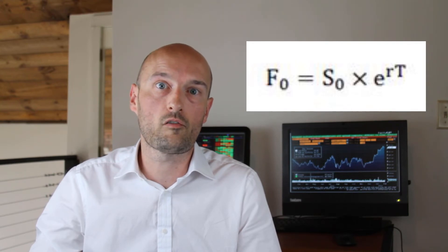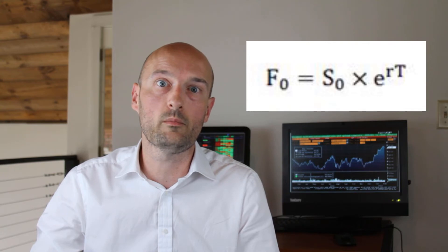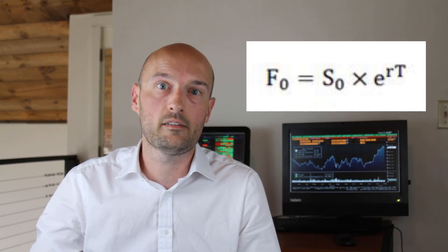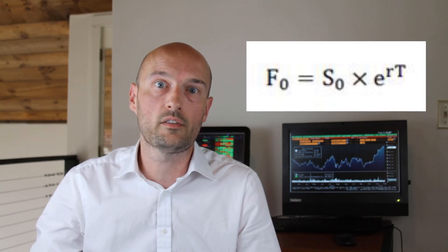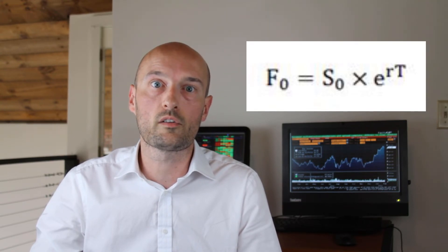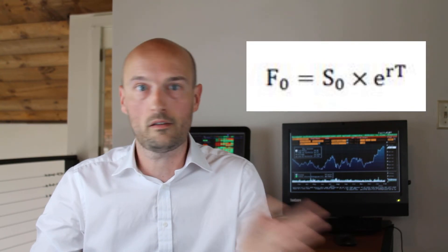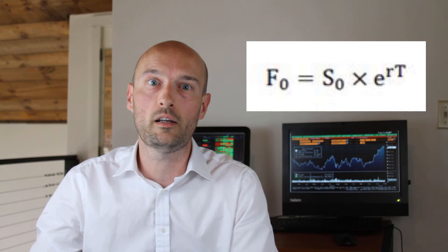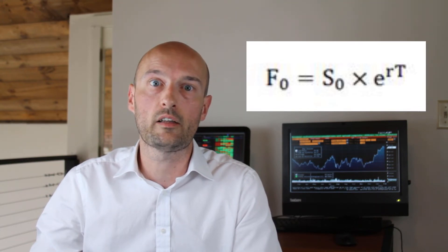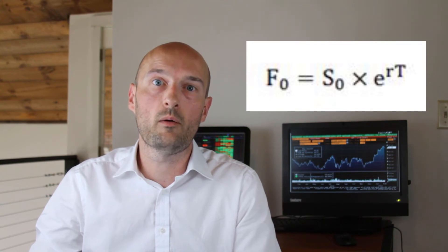Now let's look at the formula. The formula is: F₀ = S₀ × e^(rT), where F₀ is the futures price at time zero, S₀ is the spot price of the underlying at time zero, e is Euler's number — a mathematical constant like pi — approximately 2.718, continuing on forever. r is the interest rate and T is the time to expiration. We'll be using continuously compounded interest and this formula for most of our derivatives calculations in upcoming videos.